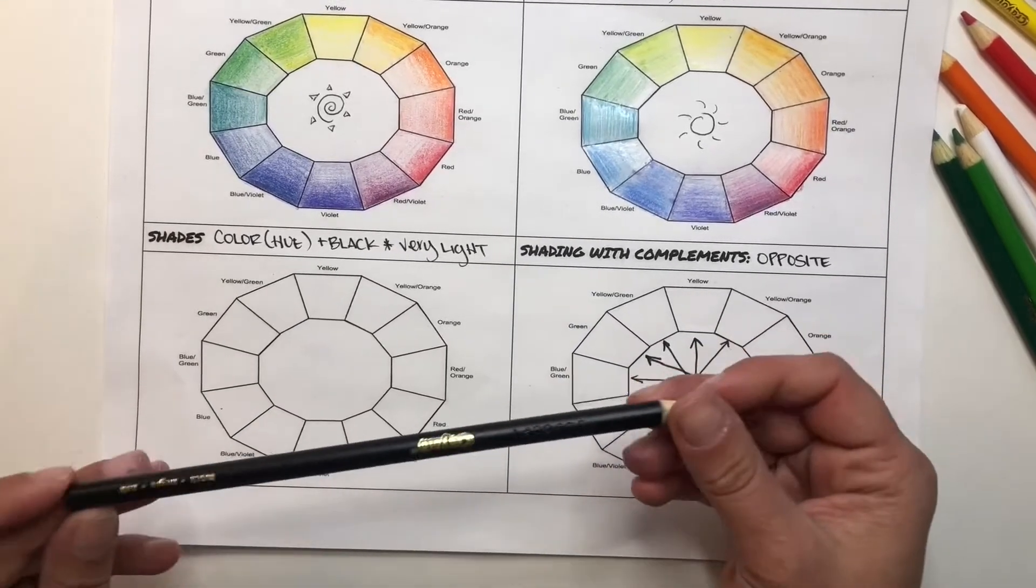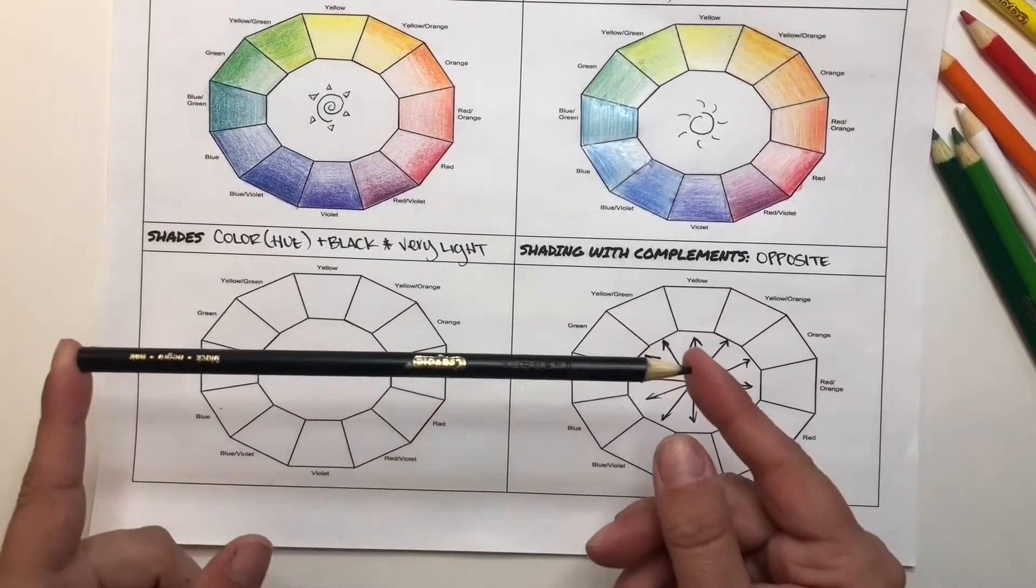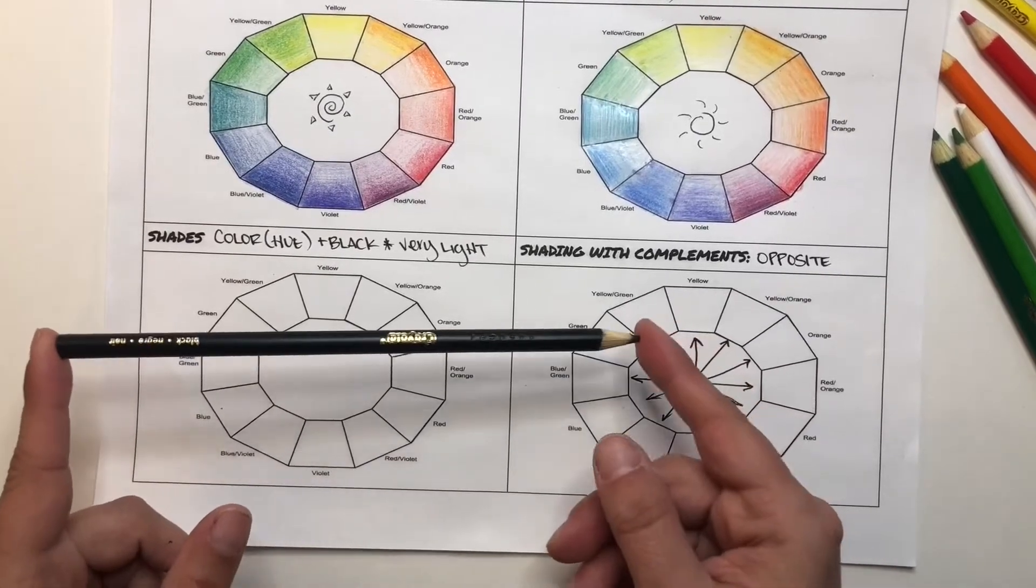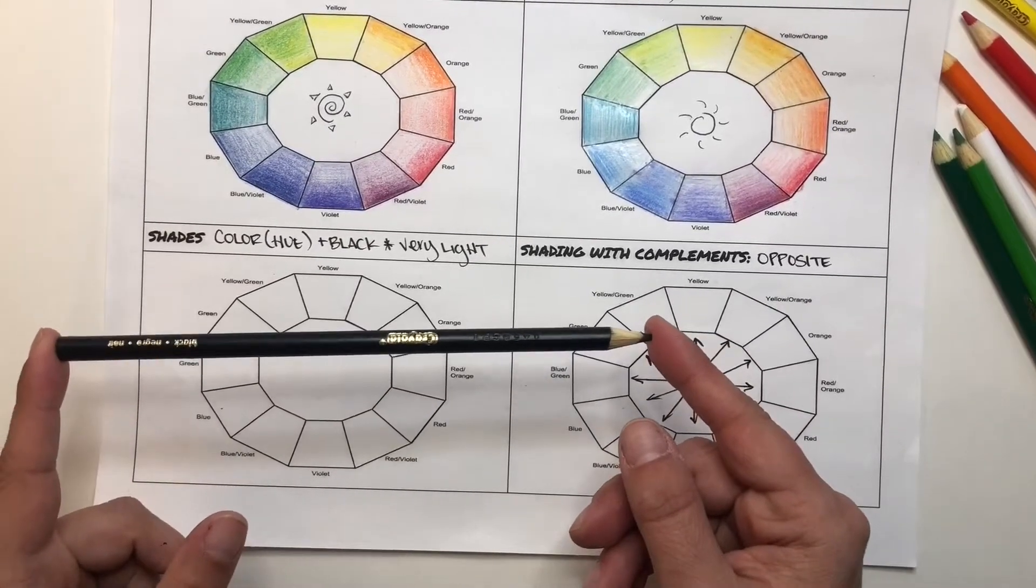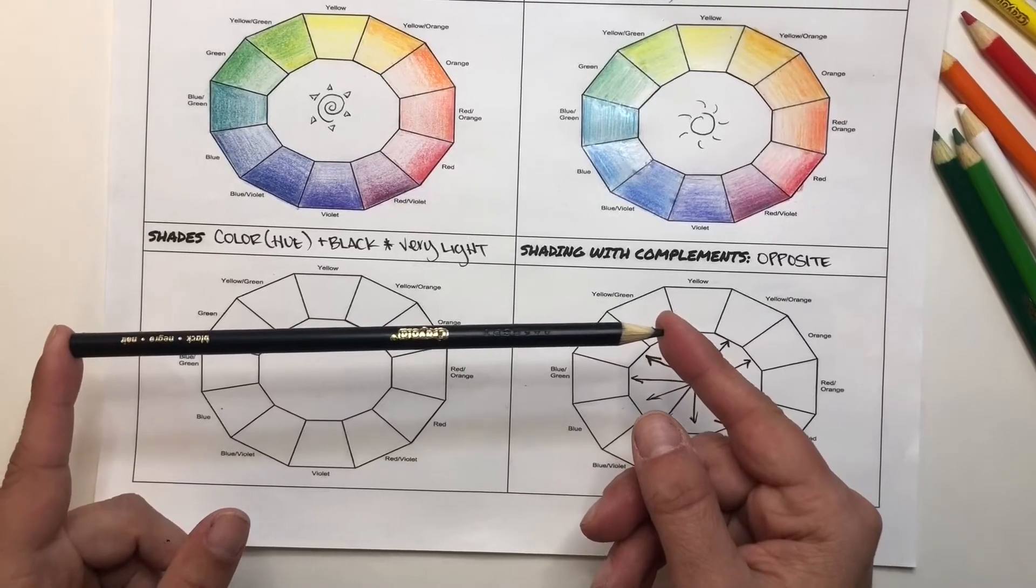So remember, black is going to be our strongest that we are using right now, so it can overpower everything. And it's not always going to make something darker, sometimes it mixes it and changes it to a new color.